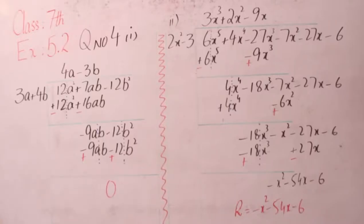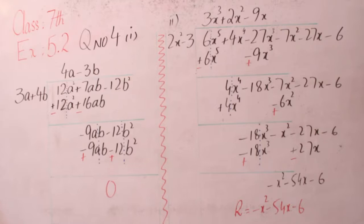بسم اللہ الرحمن الرحیم۔ آج ہم Exercise 5.2 Question number 4 کا Part number 1 کریں گے جو same ہے جس طرح کہ ہم نے previous lessons میں کیا ہوا ہے، لیکن یہاں پر question ہے کہ ہم نے divide کرنی ہے value اور remainder find کرنا ہے اگر کوئی بچتا ہوتا ہے۔ Same وہی formula میں آپ کو repeat کر دیتا ہوں۔